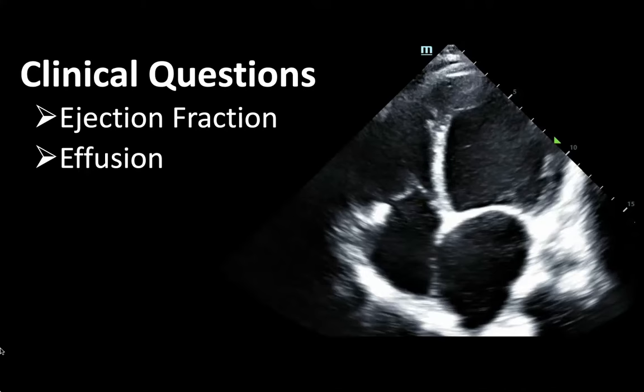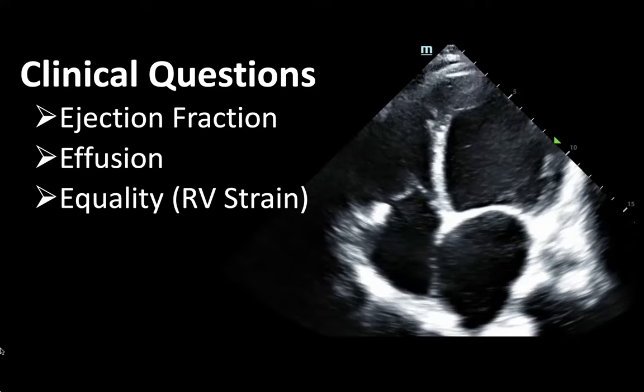Second, we look for effusion — namely, is there pericardial effusion or fluid around the heart? Thirdly, we assess for equality. We look at the difference between the right and left ventricle, which could be an indicator of right heart strain.